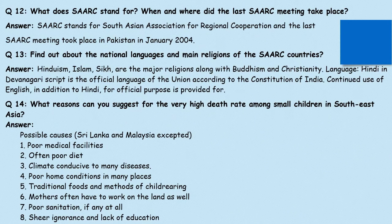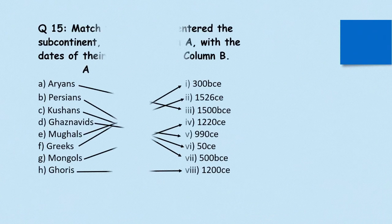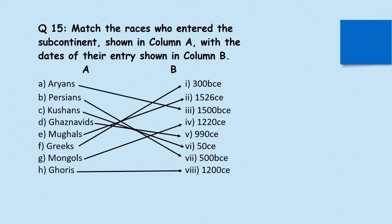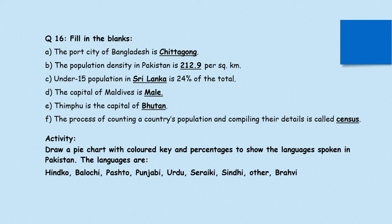The questions are in front of you, so do them very carefully. The activity is also a part of this lecture, in which you have to draw a pie chart with a colored key and percentages to show the languages spoken in Pakistan. The languages are Hindi, Gohi, Balochi, Pashto, Punjabi, Urdu, Saraiki, Sindhi, and Brahvi.